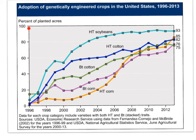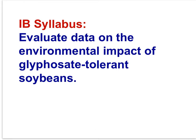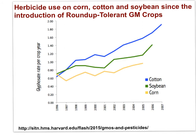This graph displays the percent of acres occupied by genetically modified crops over time. 93% of soybean acres in the U.S. in 2013 were genetically modified soybeans. Glyphosate use on these crops has increased because farmers can spray without risk to their own glyphosate-tolerant crop plants, meaning more glyphosate — a herbicide — is entering the environment.